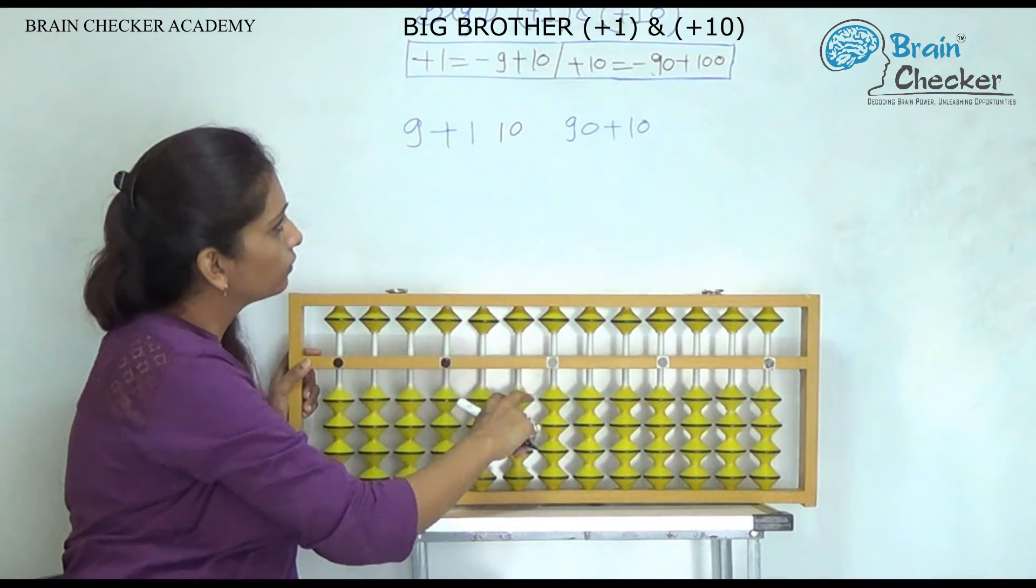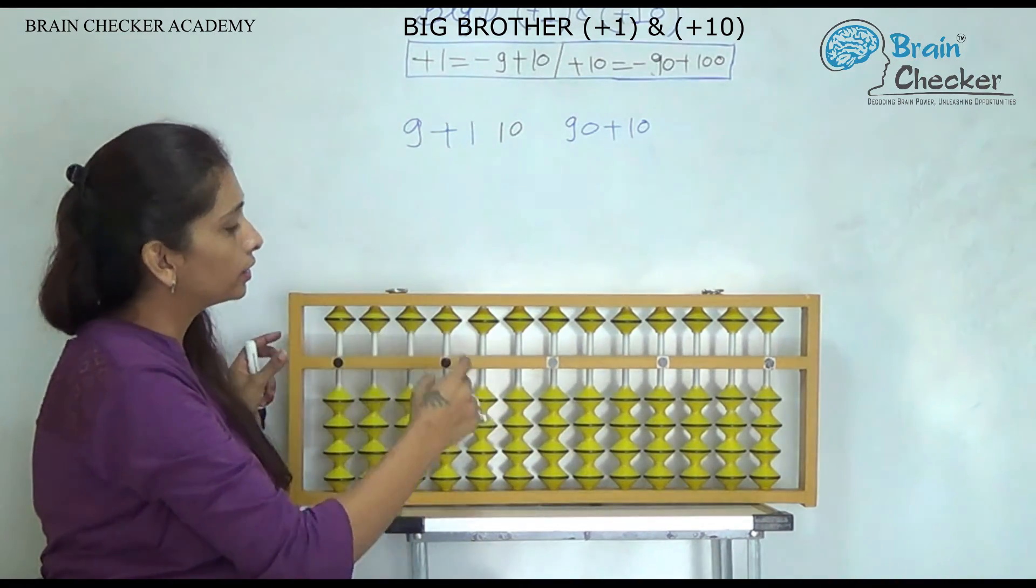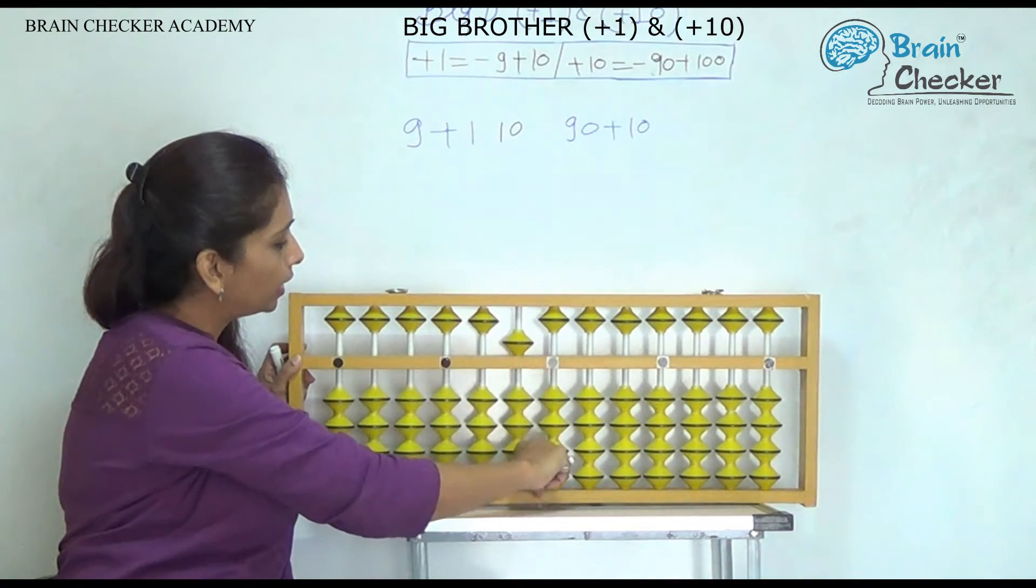Next is for the plus 10: less 90, add 100. So the example is 90, add 10.